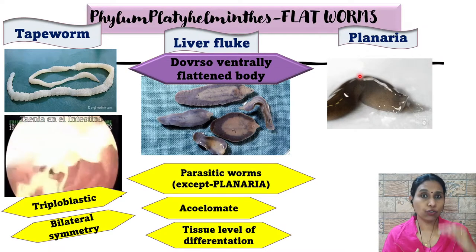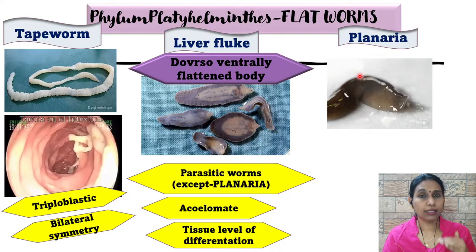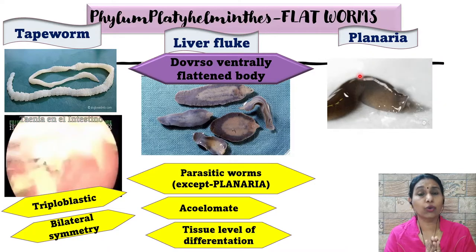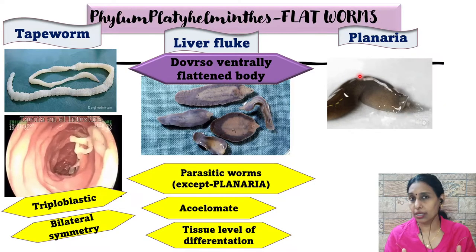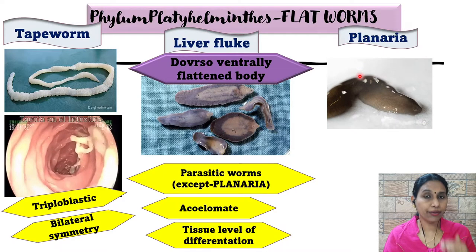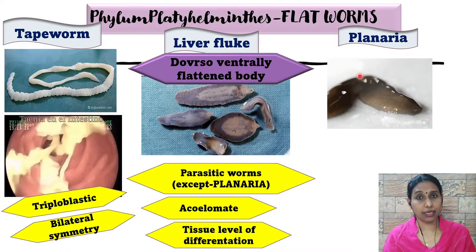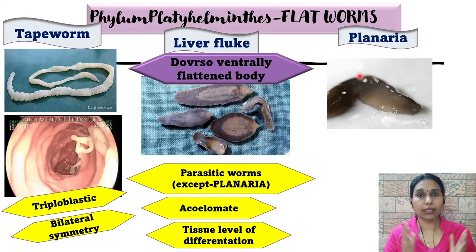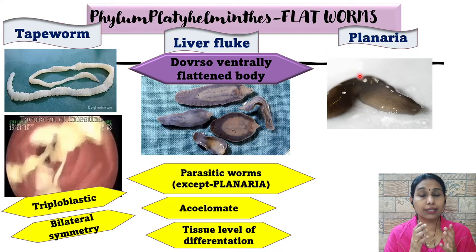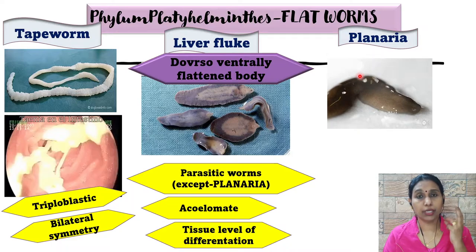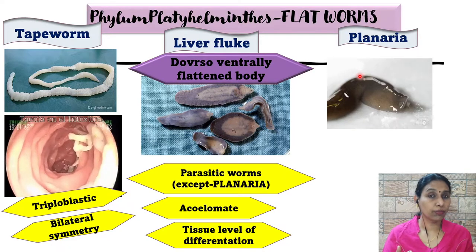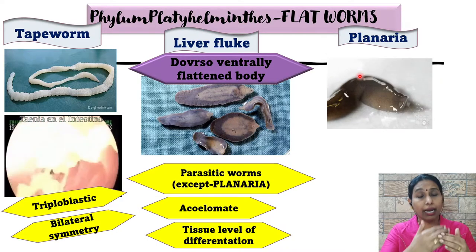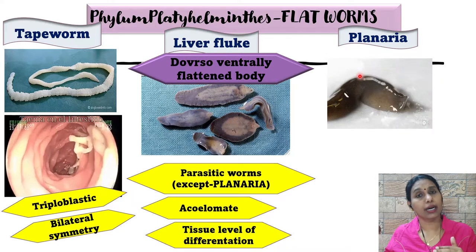In the first phylum, Porifera, there was only cellular level of differentiation — no tissues were present. In the second phylum, Cnidaria, diploblastic nature had started, meaning they developed from a two-layered structure. But triploblastic nature starts from the third phylum. It is easy to remember: triploblastic starts from the third phylum and continues to the last phylum.